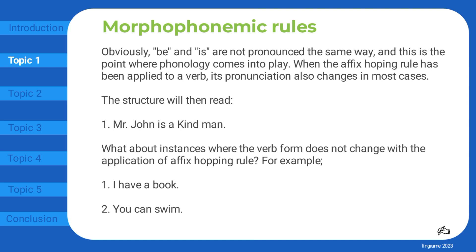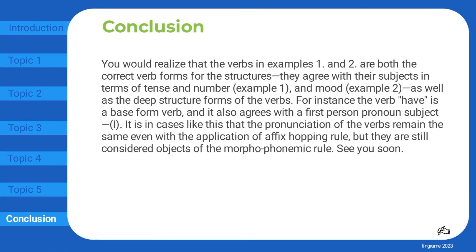What about instances where the verb form does not change with the application of the affix hopping rule? For example: 'I have a book' and 'You can swim.' You would realize that the verbs in examples one and two are both the correct verb forms for the structures — they agree with their subjects in terms of tense and number (example one) and mood (example two), as well as being the deep structure forms of the verbs. For instance, the verb 'have' is a base form verb and it also agrees with the first person pronoun subject 'I.' It is in cases like this that the pronunciation of the verbs remains the same even with the application of the affix hopping rule, but they are still considered objects of the morphophonemic rule.